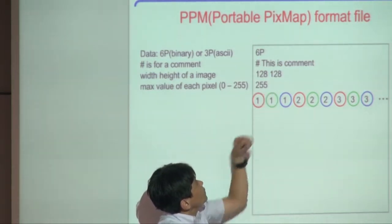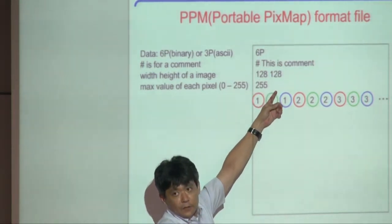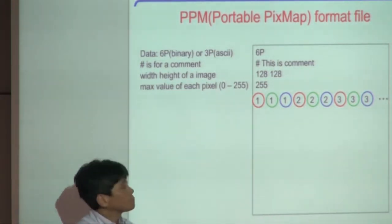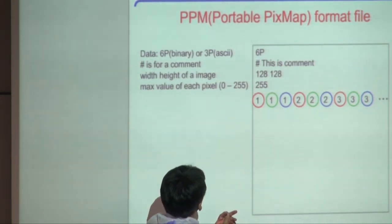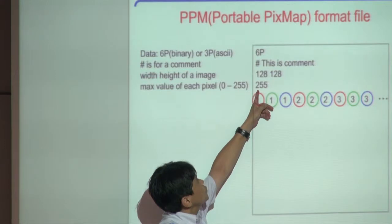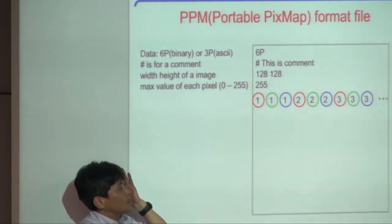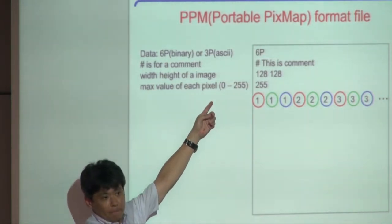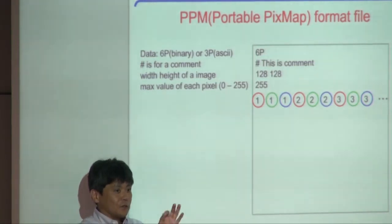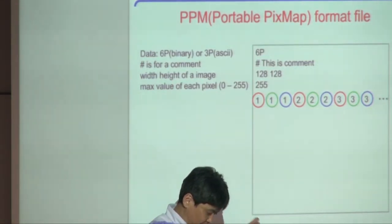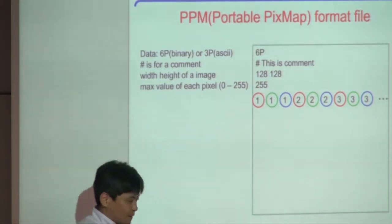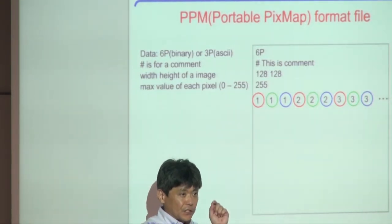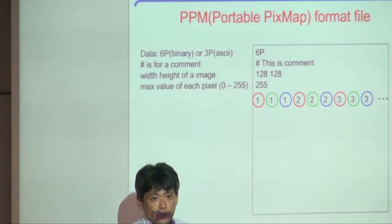A comment line begins with a hash symbol. The third line specifies width and height — in this case, 128 for both. The fourth line is the maximum value of each pixel's color. Usually each red, green, and blue color has one byte, so the integer range is 0 to 255.